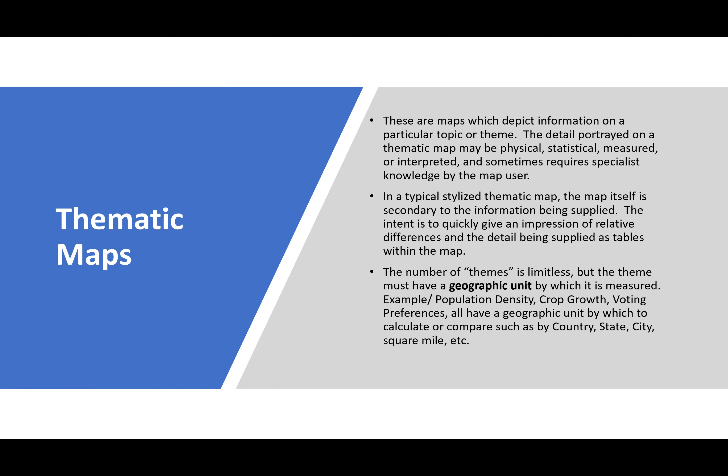In a typical thematic map, the map itself is secondary to the information being supplied. The intent is to quickly give an impression of relative differences, with the detail supplied as tables within the map. In GIS you'll see the graphic map interface with colors, shapes, and sizes, but in the background are database tables — much like Excel — that capture attributes. The number of themes is limitless, but the theme must have a geographic unit by which it's measured. Examples include population density, crop growth, and voting preferences.